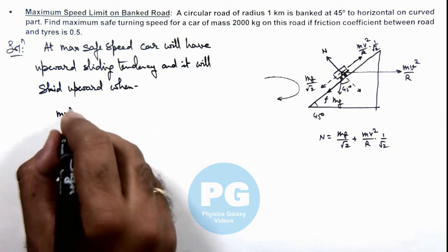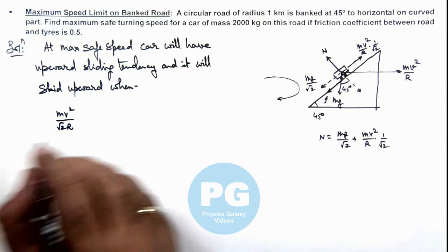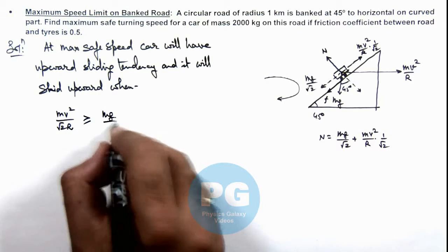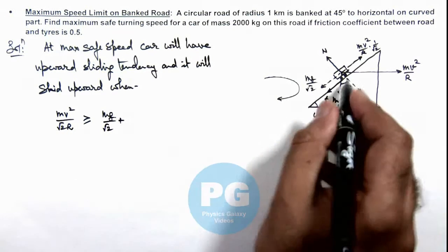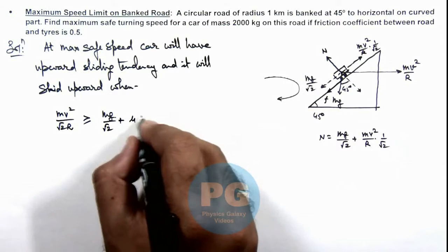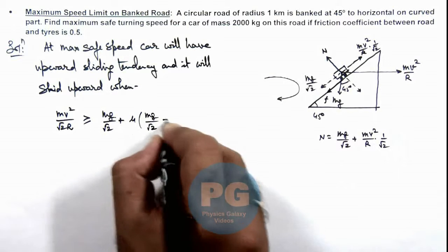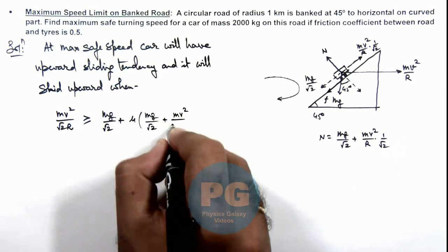That is m v square by root 2 r is more than or equal to mg by root 2 plus the friction acting over here which is mu times n. And the value of n is mg by root 2 plus m v square by root 2 r.